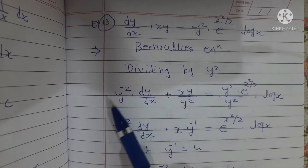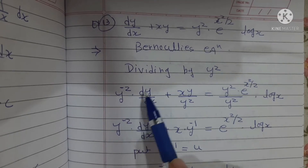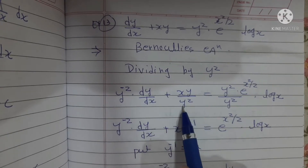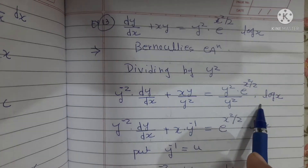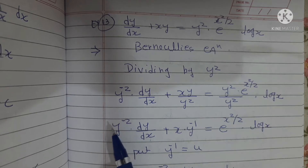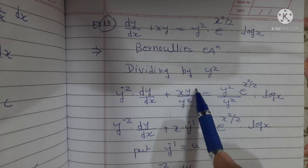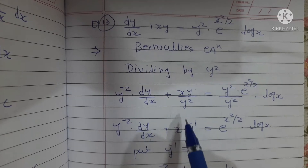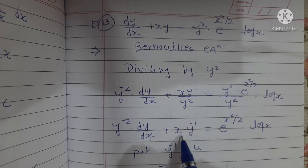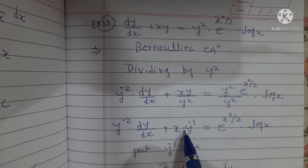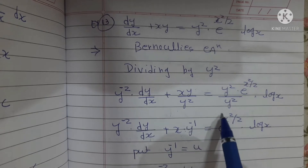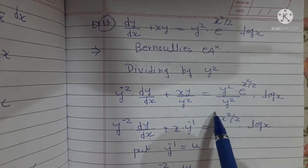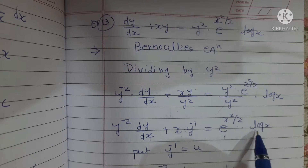Now divide the whole equation by y². We get y^(-2) · dy/dx + xy/y² = y² · e^(x²/2) · log(x) / y². Simplifying: y^(-2) · dy/dx + x · y^(-1) — here one y and one y cancel — and on the right side y² cancels, leaving e^(x²/2) · log(x).